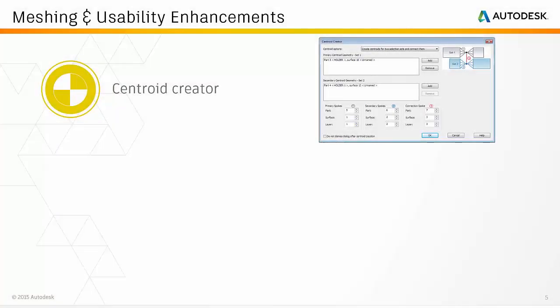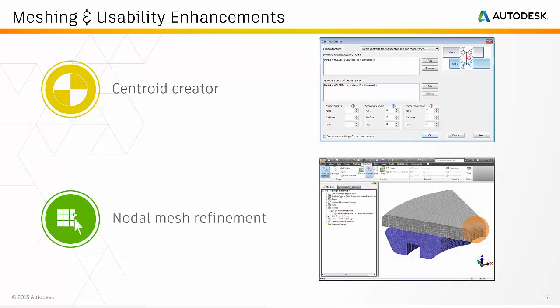The next usability enhancement is around centroid creator. For the 2017 release we redesigned the centroid creator dialogs, added descriptive images of the expected outcome, and added the ability to control part surface and layer numbers for each set of geometry created. Additionally, nodal mesh refinements are now listed in a new browser entry where their parameters can be easily edited, copied, deleted, or grouped.